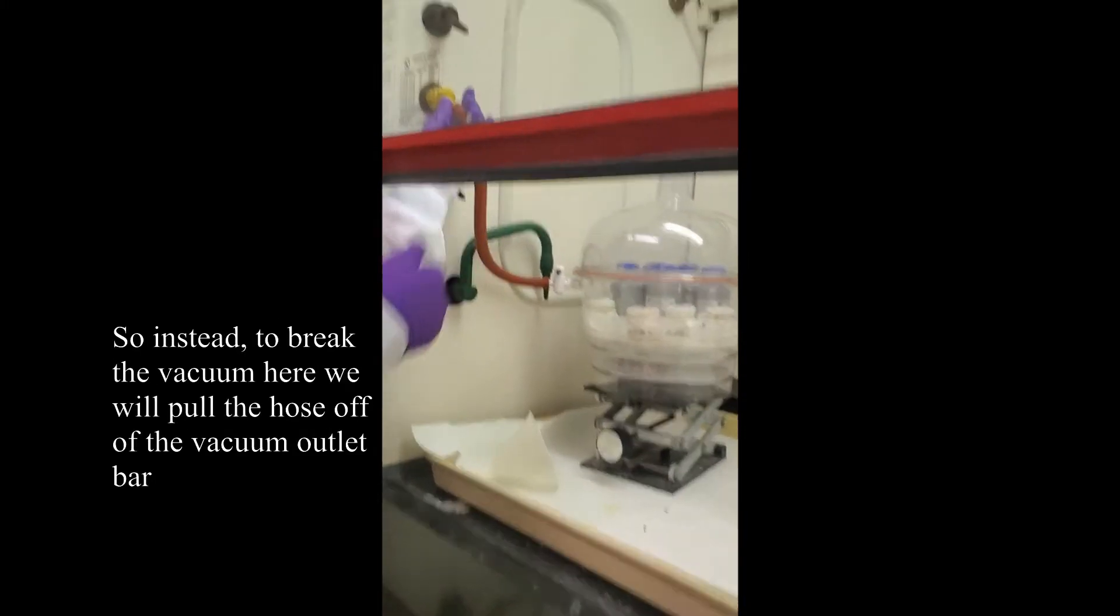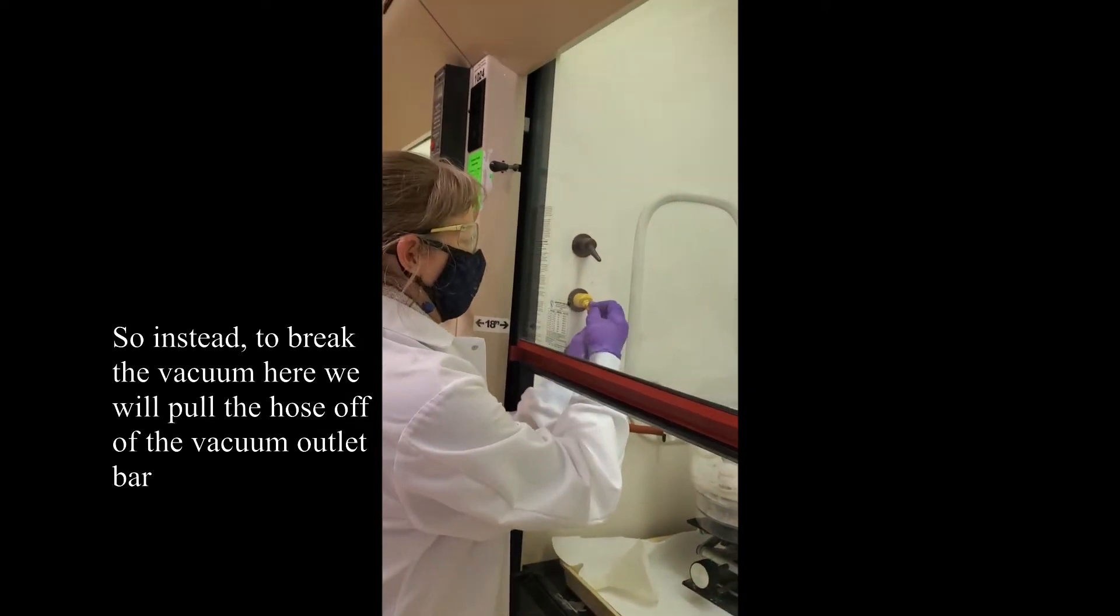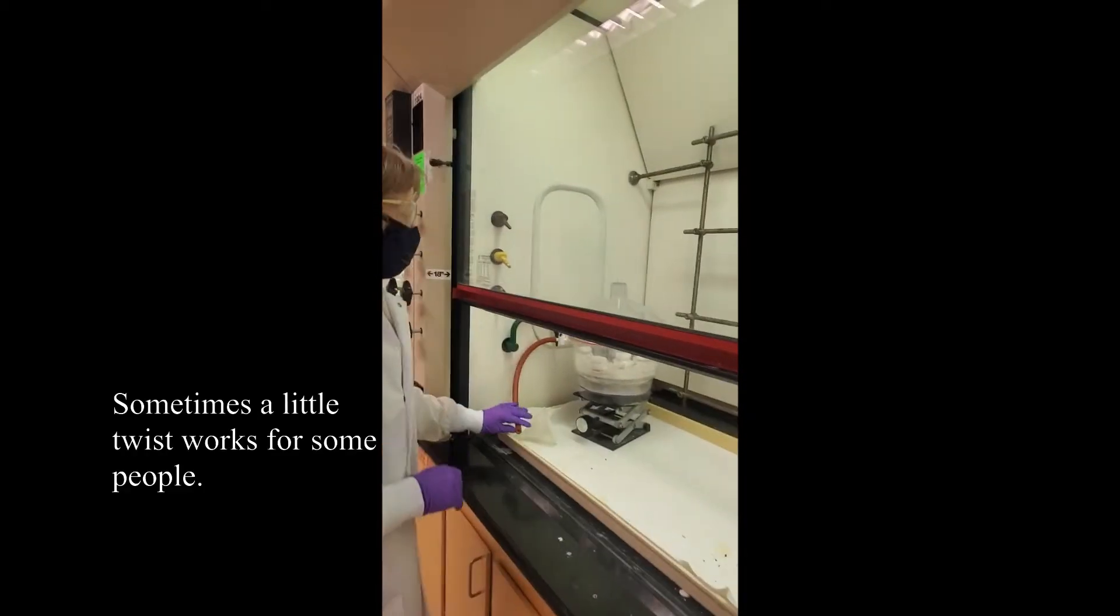So instead, to break the vacuum here, we will pull the hose off of the vacuum outlet valve. Sometimes a little twist works for some people.